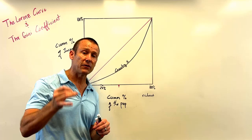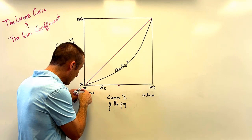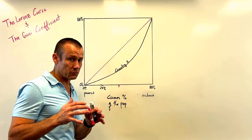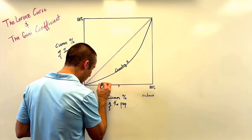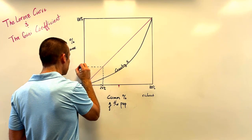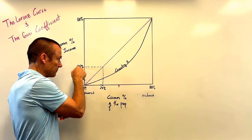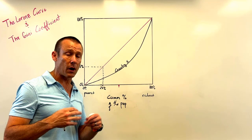Let's focus on the pink line first. If we go to the poorest 25 percent of the population, dash up to the pink reference line and over to the vertical axis, we find 25 percent. That means the poorest 25 percent of the population are earning 25 percent of the income — they're not relatively poor at all under perfect equality.